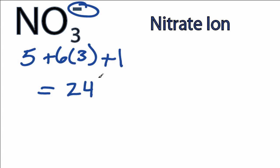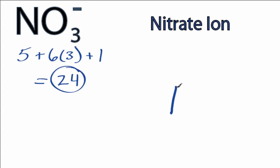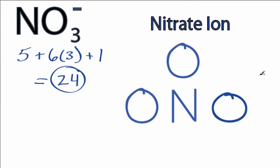For the nitrate ion Lewis structure, nitrogen is the least electronegative, so we'll put that in the center and then put the oxygens around it. We have a total of 24 valence electrons for the nitrate ion Lewis structure.